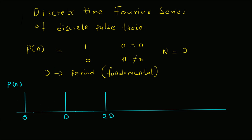This is the definition of the signal in the fundamental period. This is the representation of the signal — it is a periodic signal. Now we want to find the discrete time Fourier series for this signal. In the fundamental period, the value equals 1 only for n equal to 0, and 0 for n not equal to 0.